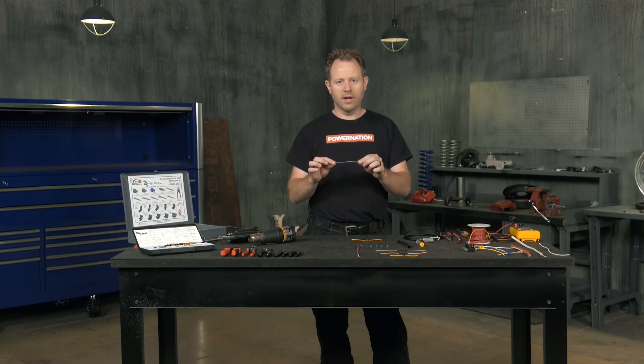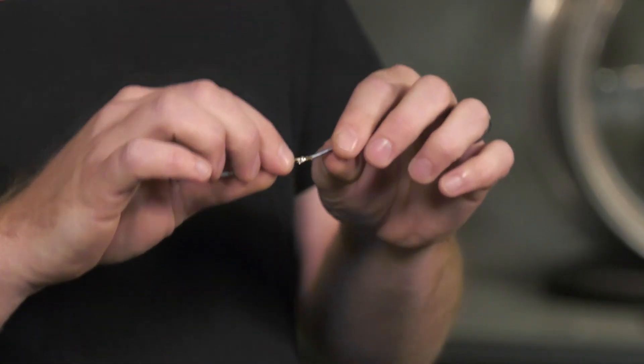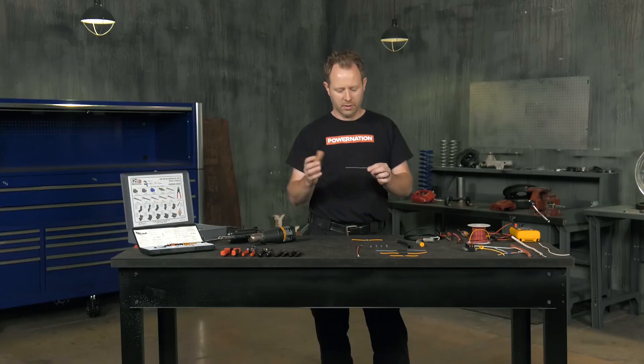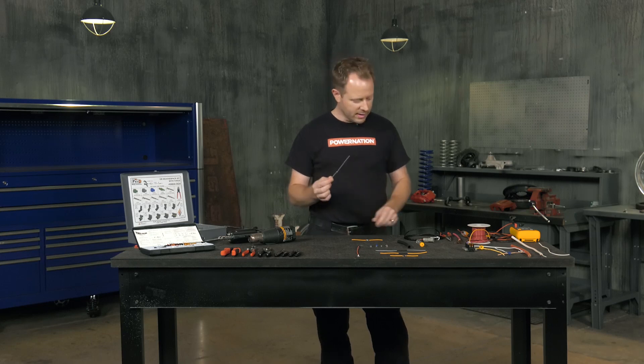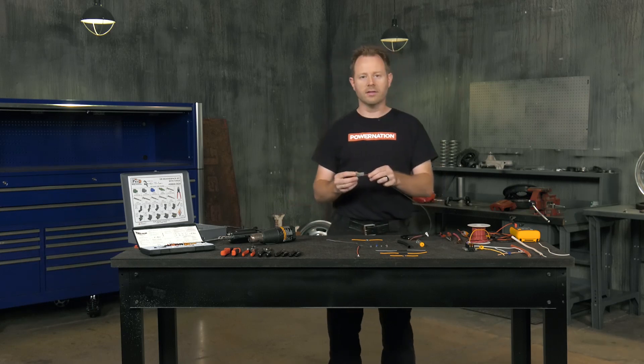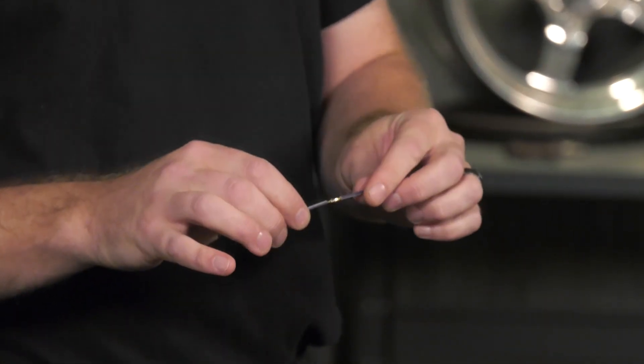And if this is going down the road in a car, it's bouncing around, and it can have a tendency to break. Just think about a paper clip. If you take a paper clip and bend it back and forth multiple times, it breaks. So that's what happens with a soldered connection that's loose like this.